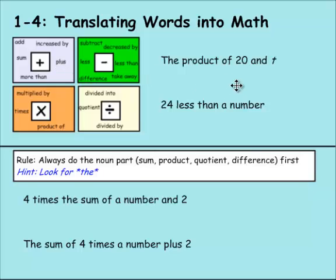Moving on, we have the product of 20 and T. If we're going to turn that into a math problem, we see that product is multiplication. So we're looking for a multiplication problem of 20 and T. You could write it like this: 20 times T, or a lot of people would write 20T to show multiplication.